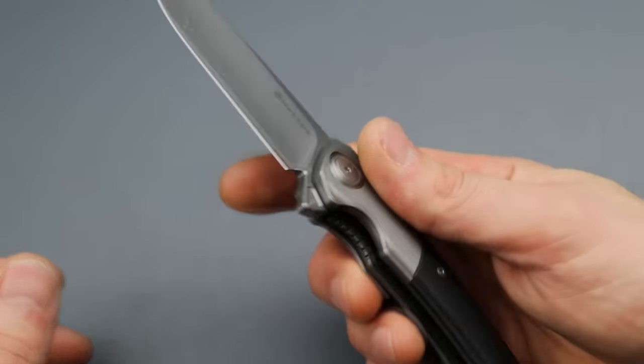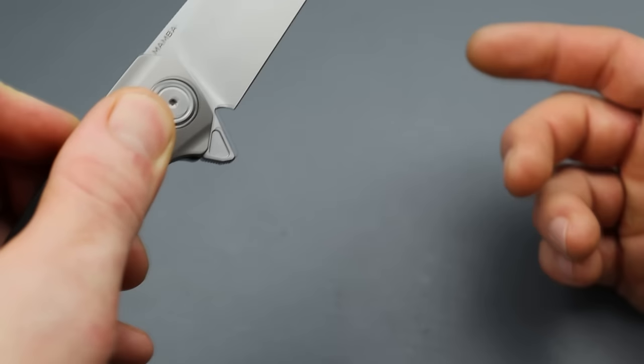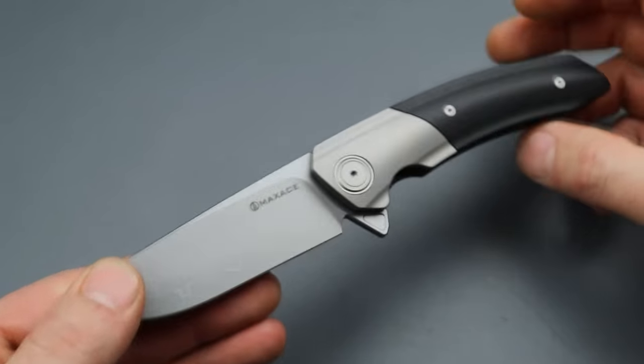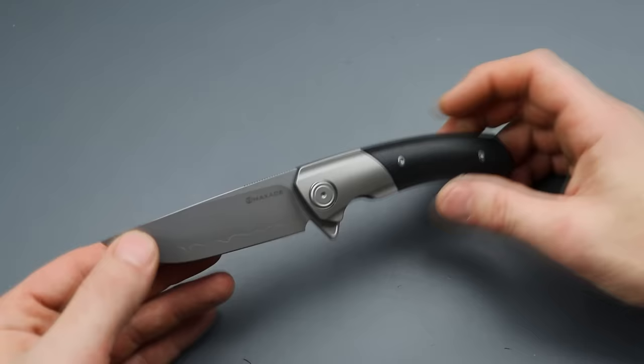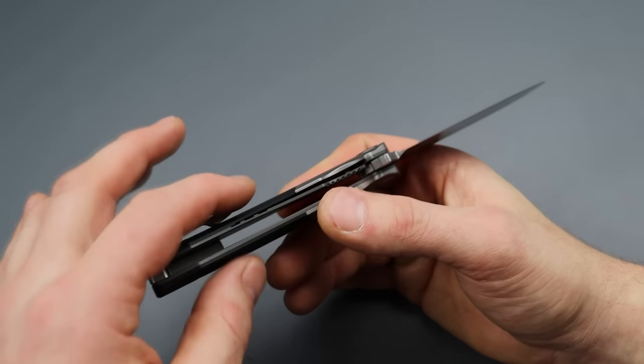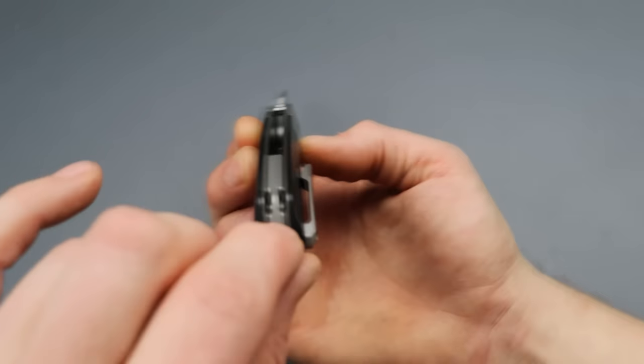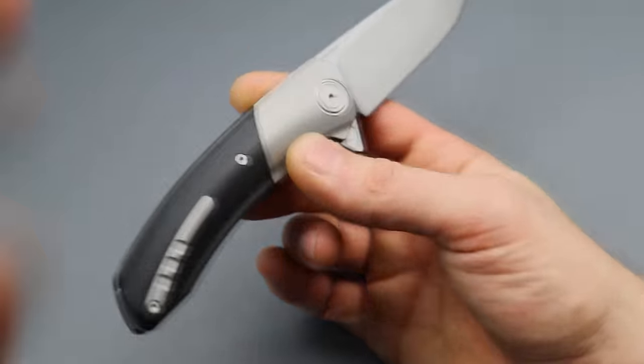In some cases this might even be better for some people, so you're not going to lock yourself out by putting pressure on top of the lock bar. It does have black G10. I'm sure it comes in different versions. Titanium milled pocket clip and back spacer with a nice little hidden lanyard tube back there.